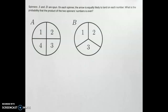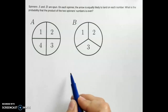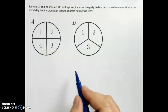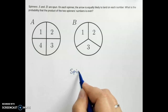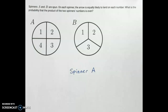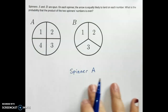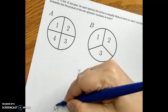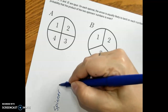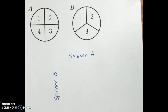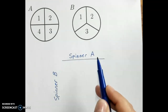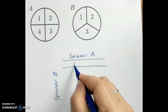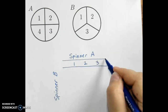So an array is kind of like a table. A compound event is when more than one thing is happening. Across the top, I'm going to list the things that can happen on spinner A. When I spin spinner A, there are four things that can happen: I can land on a one, a two, a three, or a four.